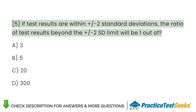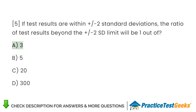If test results are within plus-minus two standard deviations, the ratio of test results beyond the plus-minus two SD limit will be 1 out of: A. 3. B. 5. C. 20. D. 300.